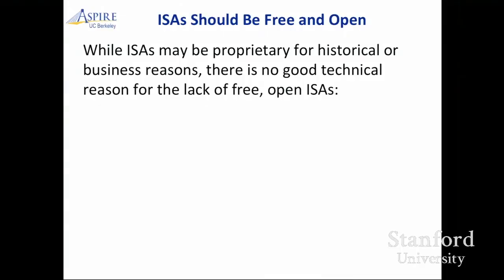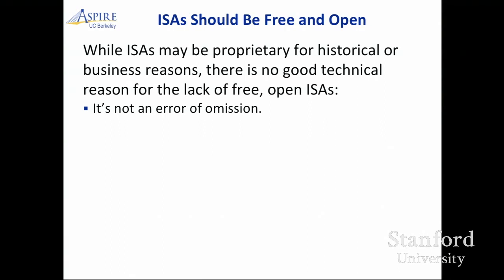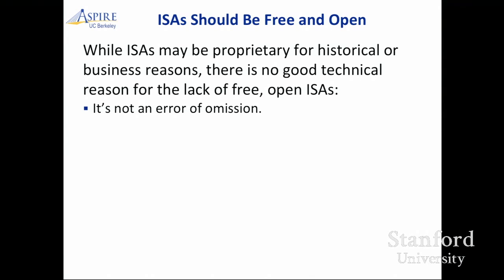So why are you in a situation where there are multiple different ISAs? It's basically historical and business reasons — there's no technical reason for the lack of a free and open ISA. It's not an error of omission. It's not like the guys at Intel and ARM just wake up in the morning and say, 'Oh, we forgot to make our ISA open.' They will actively go and sue you if you try to do an implementation of an Intel Core, an ARM Core, an IBM Power, or any of these other ISAs. They'll aggressively go after anybody trying to implement to that standard.